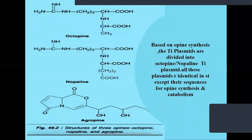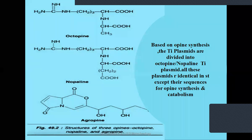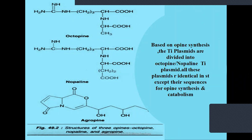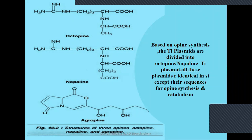The bacteria have to survive in the soil and take nutrients from the plant genome. When the T-DNA integrates into the plant genome, it starts producing opines, and the catabolism also happens in the Ti plasmid. Once catabolism happens, Agrobacterium tumefaciens will utilize those opines as a carbon, nitrogen source and energy. Based on opine synthesis, Ti plasmids are divided into octopine, nopaline, agropine, and monopine types. All these plasmids are identical in structure except their sequences for opine synthesis and catabolism.